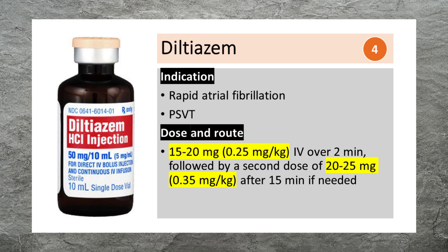Diltiazem is used to treat rapid atrial fibrillation or PSVT. It can be given as 15-20 mg IV over 2 minutes, followed by a second dose of 20-25 mg after 15 minutes if needed.